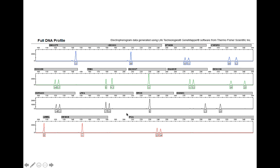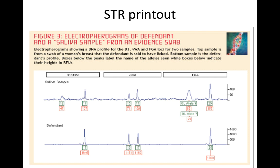Here is an electropherogram of a defendant and a saliva sample from an evidence swab. In this scenario, we have a DNA profile for only three of the 13 STR regions — so this is only a snapshot. The top line is from a swab of a woman's breast that the defendant is said to have licked. The bottom sample is the defendant's profile. In the saliva sample from the woman, STR region one has two different peaks, and then the defendant has one of those peaks — the 17 — and that matches.